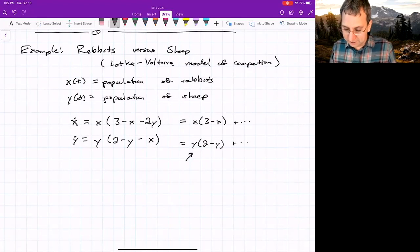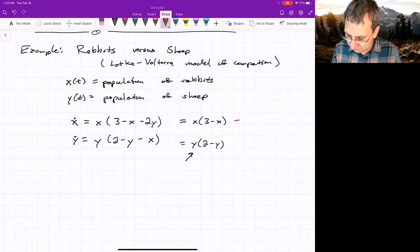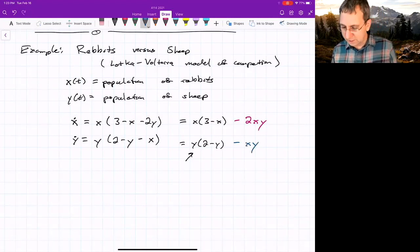But now in this X dot, we'll put in an interaction between them. So this is minus 2XY, and then for the sheep, it's minus XY.